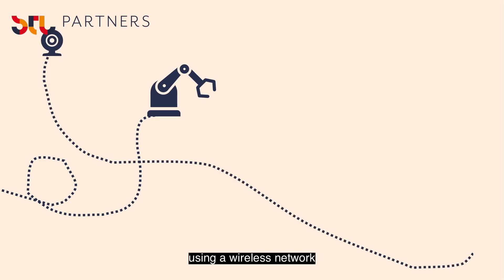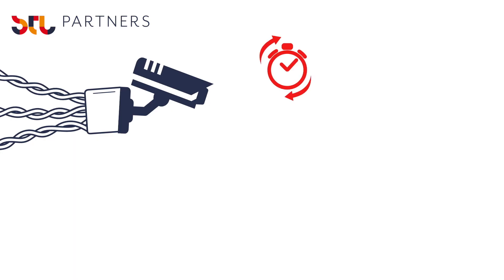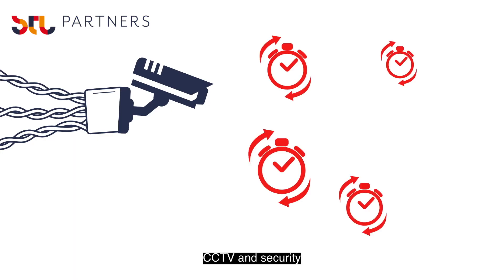In other cases, using a wireless network makes it easier to install new devices and systems. It can be seen through use cases such as CCTV and security.